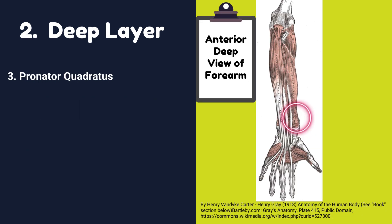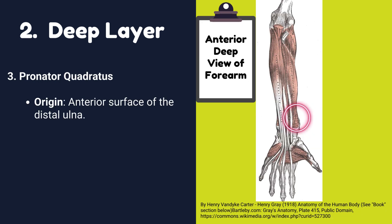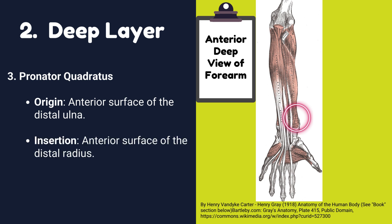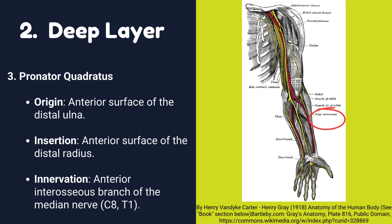Number three: Pronator quadratus muscle. Origin: it originates from the anterior surface of the distal ulna. Insertion: it is inserted into the anterior surface of the distal radius. Innervation: it is innervated by the anterior interosseous branch of the median nerve.